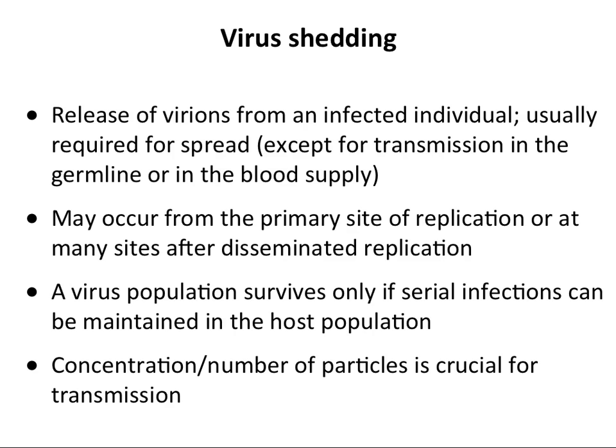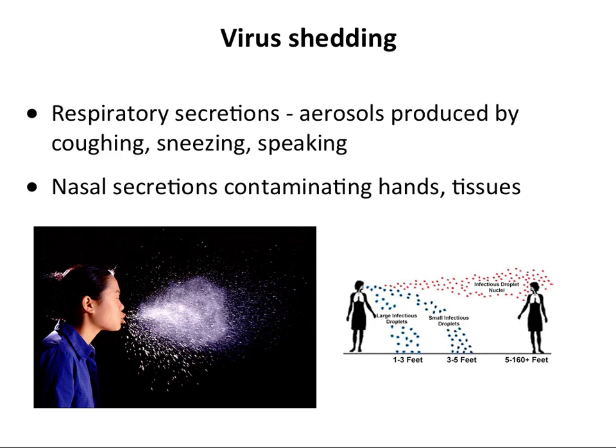We have to shed virus in order to spread infection from one host to another. It makes no sense to keep a virus in one host — that's a dead end. Shedding can happen where the virus first replicates — the primary site, respiratory or gut tract — or from a secondary site such as the skin if the virus ends up there and makes a rash. One way is by respiratory secretions. You make aerosols by coughing, sneezing, speaking. When you sneeze you expel about 20,000 drops and they all have viruses in them. Some are very big and fall to the ground a foot or three feet away. Others are very small — droplet nuclei — that can go between five and 160 feet away and be sucked into airplane air recirculation systems and infect other people.